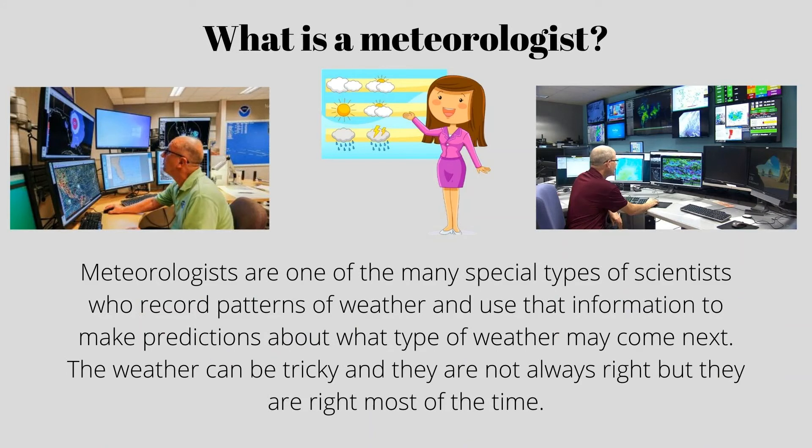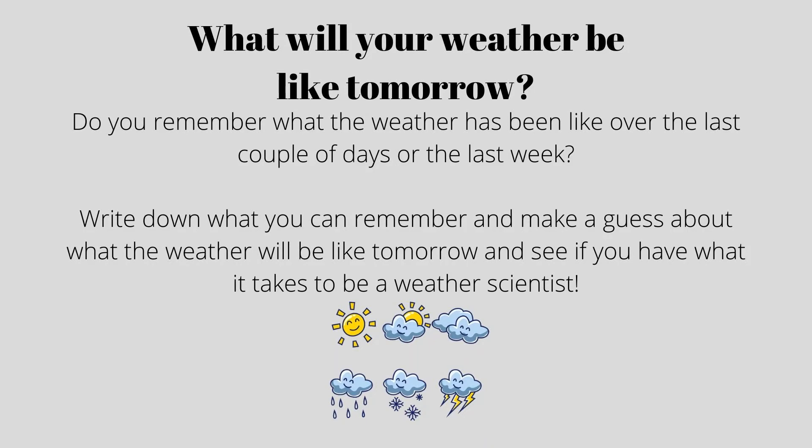Meteorologists are one of the many special types of scientists who record patterns of weather, and use that information to make predictions about what type of weather may come next. The weather can be tricky, and they are not always right, but they are right most of the time. What will your weather be like tomorrow? Write down what you can remember and make a guess about what the weather will be like tomorrow, and see if you have what it takes to be a weather scientist.